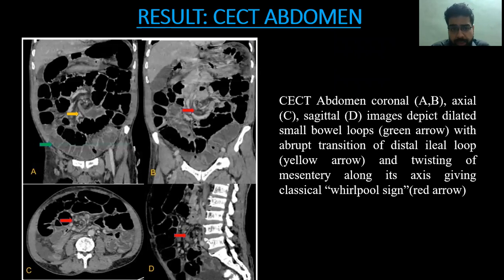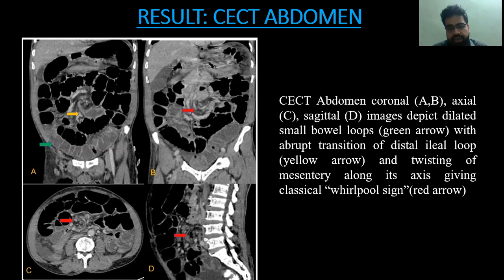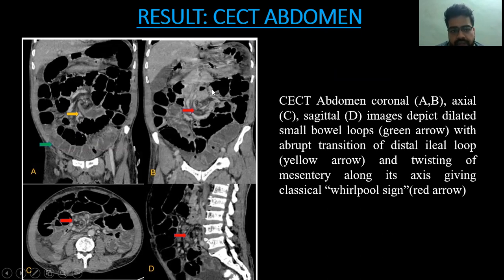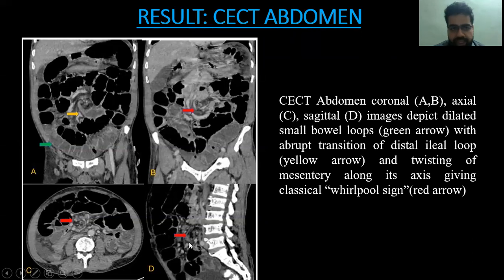The imaging findings on CECT abdomen showed, in the coronal images as you can see, dilated small bowel loops depicted by the green arrow, an abrupt transition of the distal ileal loop, and twisting of the mesentery along its axis, giving the classical whirlpool sign as indicated by the red arrow.